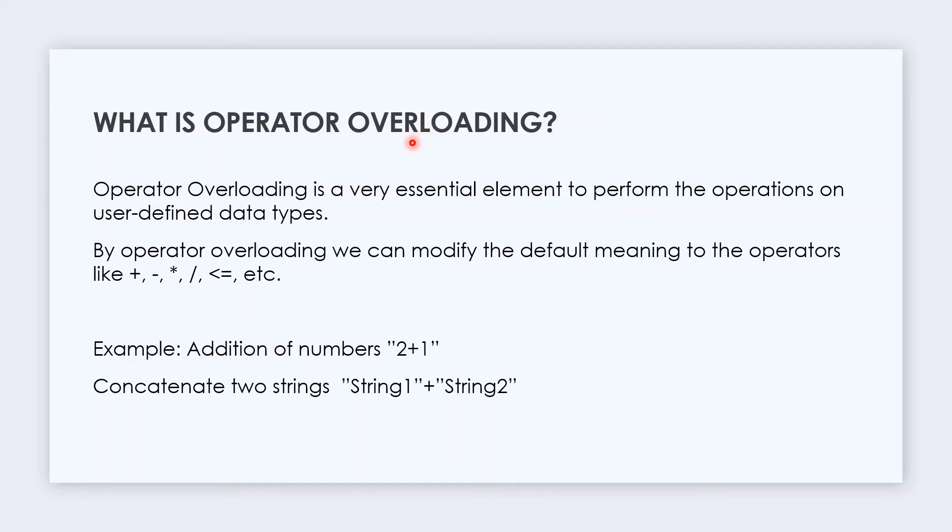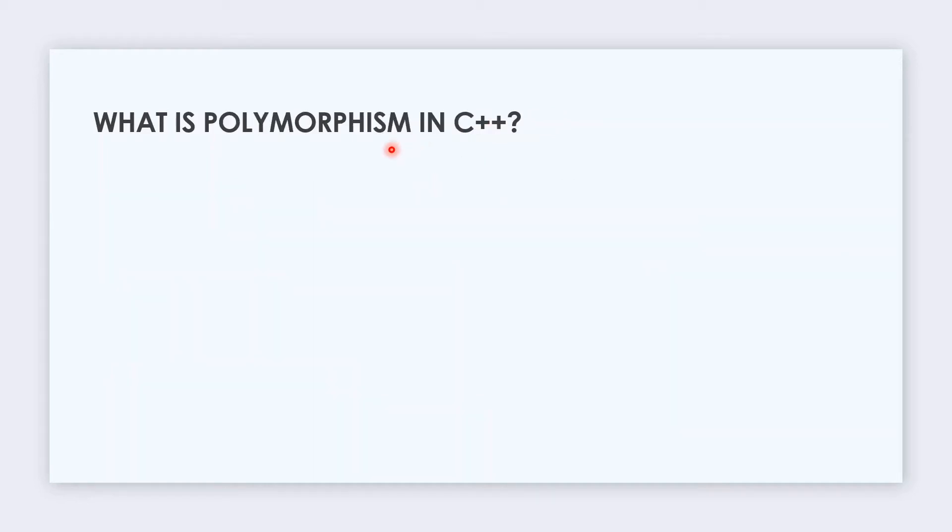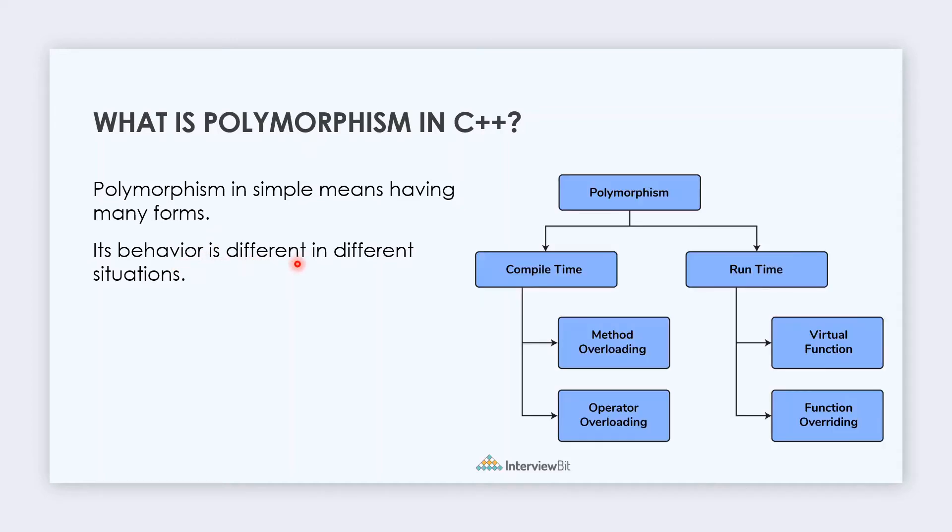The next question is: What is polymorphism? Poly means many, morphism means types, so polymorphism simply means having many forms. Its behavior is different in different situations. Polymorphism has two types: compile time and runtime. In compile time it's method overloading and operator overloading. In runtime it's virtual function and function overriding. I have a separate video on polymorphism on our channel, please check it out.